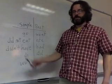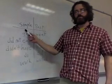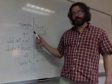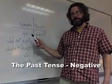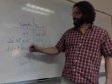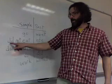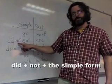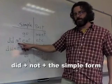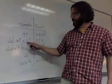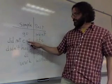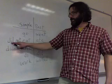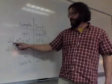If you know the difference between the simple form of the verb and the past tense form of the verb, then making the past tense negative is easy. All you need to do is add 'did not' to the simple form of the verb — or you can call it the infinitive form of the verb: go, eat, have, do, work. For example: did not eat, did not have.